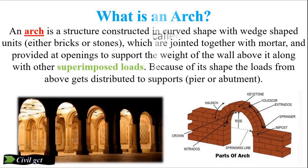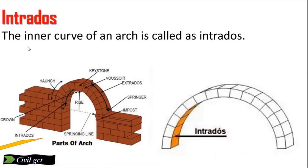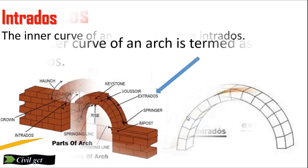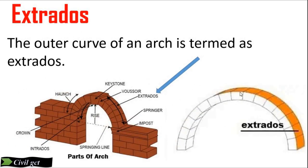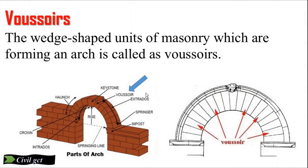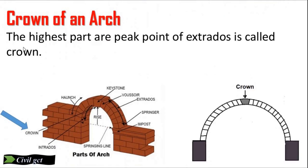The load transfers to the pier or column. Number one is intrados: the inner curve of an arch is called the intrados. Number two is extrados: the outer curve of an arch is termed the extrados. Voussoirs: the wedge-shaped units of masonry which form an arch are called voussoirs.